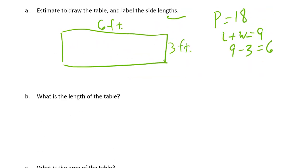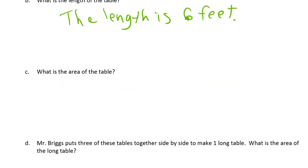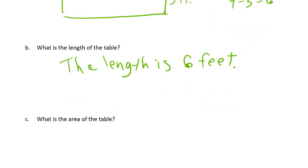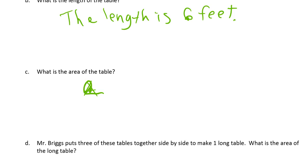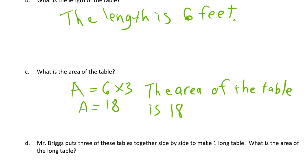What's the length of the table? The length is 6 feet. What is the area of the table? That's going to be 6 times 3. A equals 6 times 3, which is 18. The area—you should write the area of Mr. Briggs' table, but the area of the table is okay. Units, area's square units, very important. Square feet.